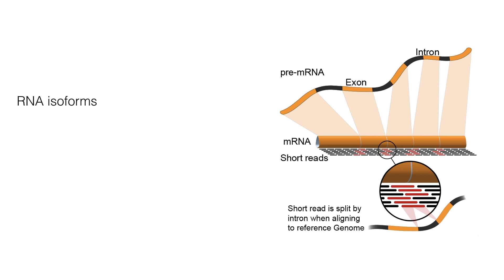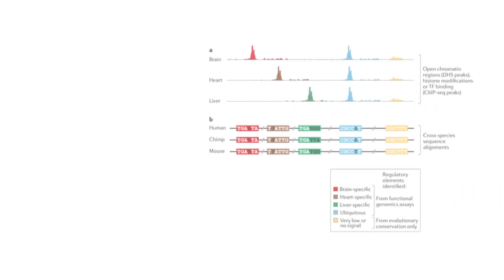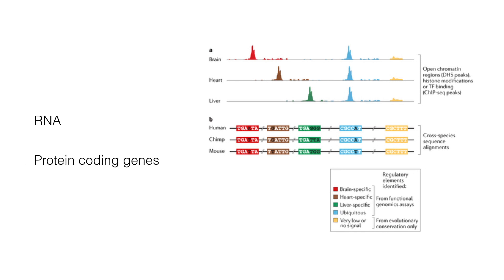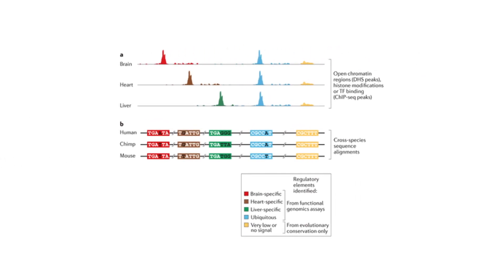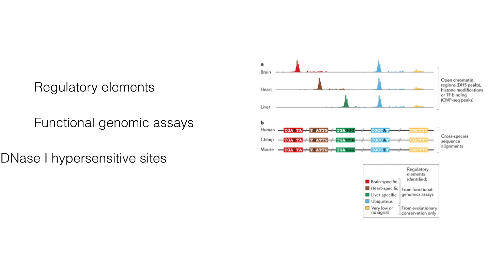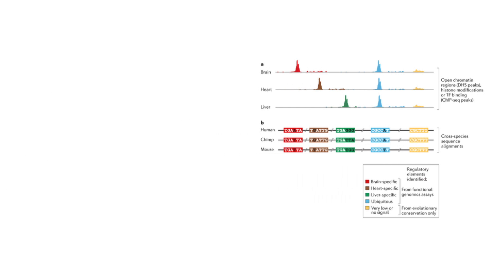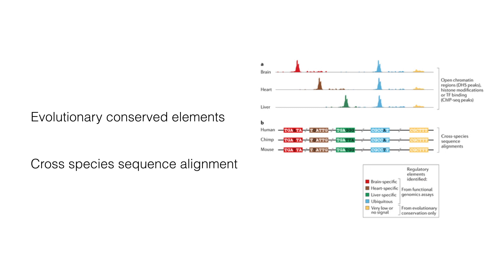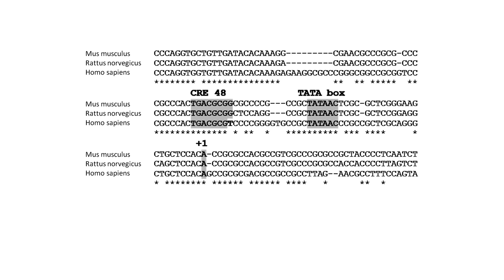This method can also allow identification of RNA isoforms — to see if there are different forms of RNA expressed from the same gene in different tissues. RNA is expressed not only for protein coding genes, so transcripts allow genes to be found that may not be predicted otherwise. Examples are regulatory elements, which can show differential activity across tissues and can be identified by applying various functional genomic assays, including DNase I hypersensitive sites or ChIP-seq peaks, or by looking for evolutionarily conserved elements through cross-species sequence alignment, which can identify functional elements like the TATA box.